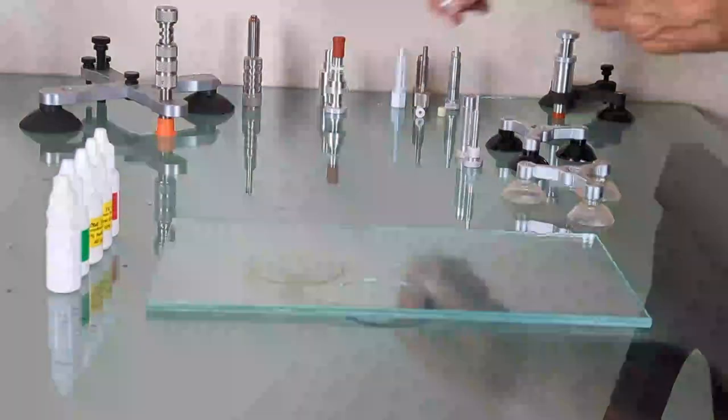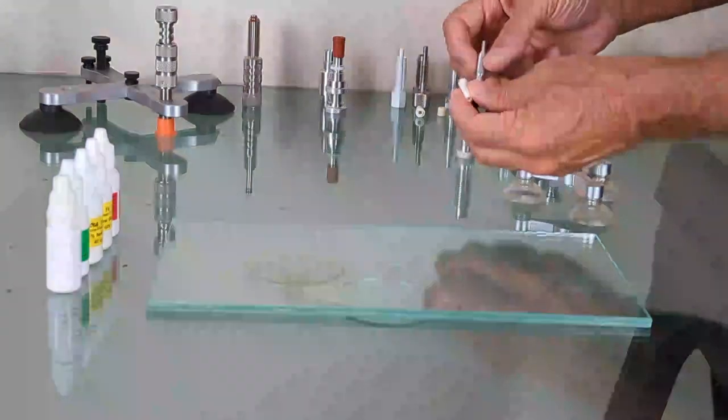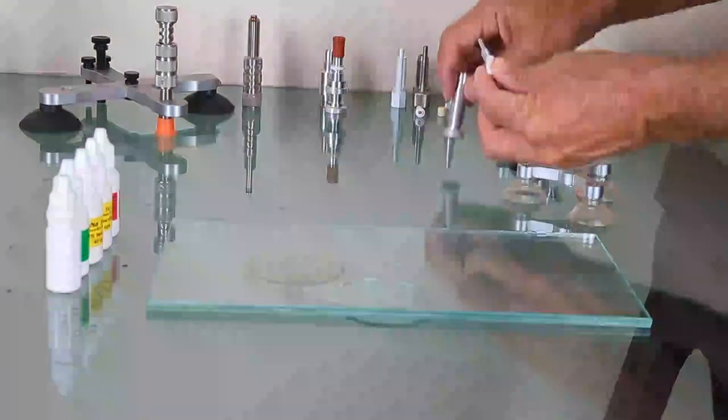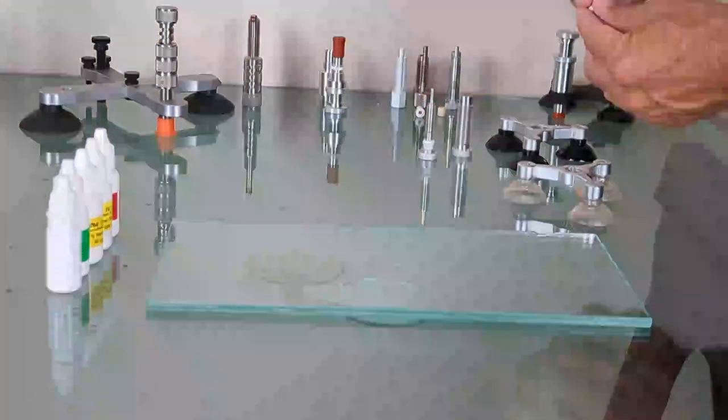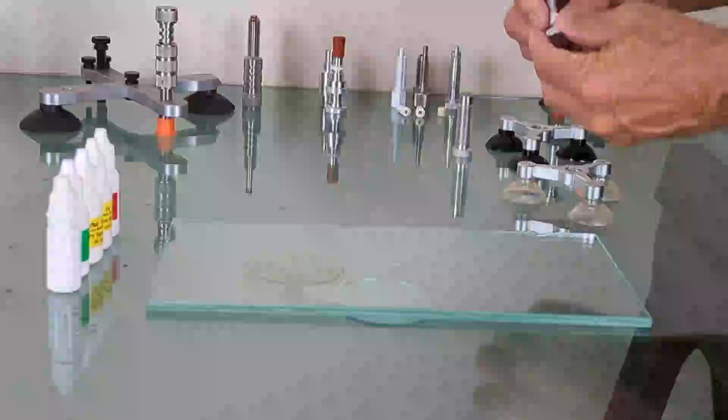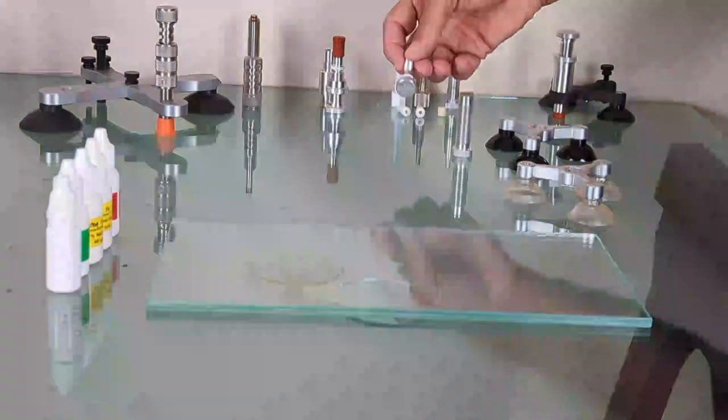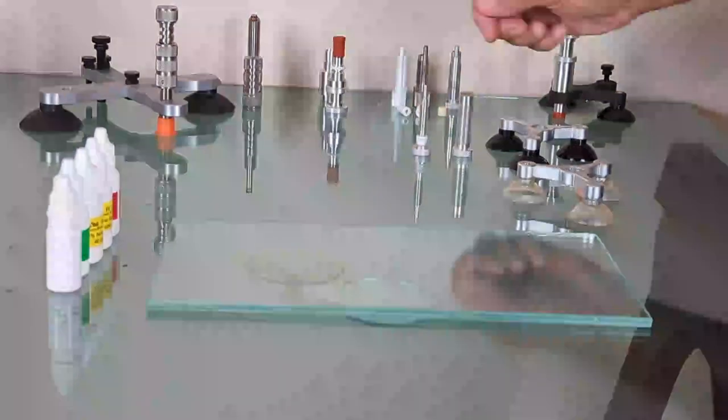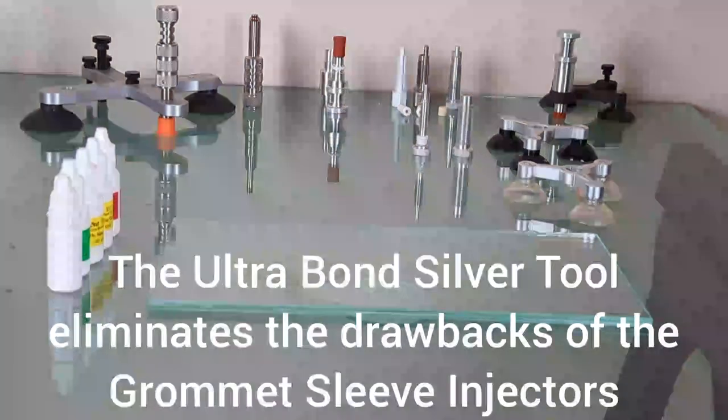The resin comes out the top and will spill into the chamber and all over these threads. So what we have done is we have added a seal onto the grommet tool which will give you more vacuum, give you a little more pressure, and prevent any resin from leaking out.